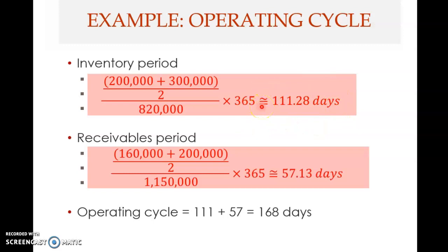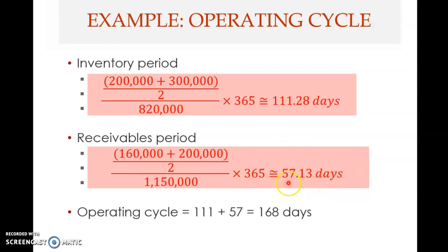Next is the receivable period. We take the average receivables — beginning receivables plus ending receivables — divide by two to get the average, then divide by sales or credit sales and multiply by 365. This gives us the receivable period of 57.13 days, meaning on average the company takes about 57 days to collect from its customers after making a sale.